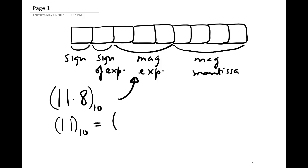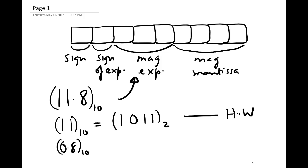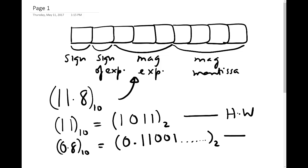11 in base 10 to base 2 is 1011 base 2. You can do this as homework because this is covered already. 0.8 base 10 will be 0.11001... and keeps on going in base 2. You can also do this as homework because it is covered in a previous video.